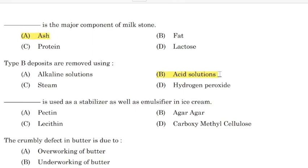Correct answer: Option A — Ash. Blank is used as a stabilizer as well as emulsifier in ice cream — Correct answer: Option D — Carboxymethyl cellulose.